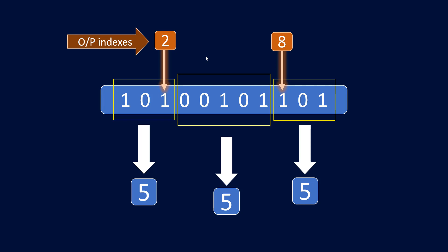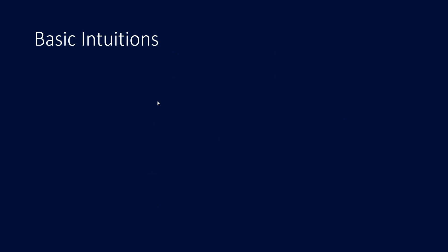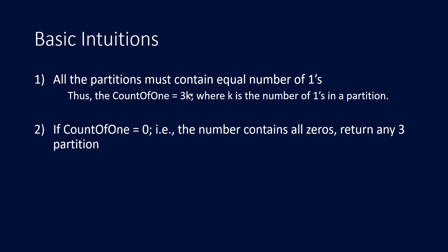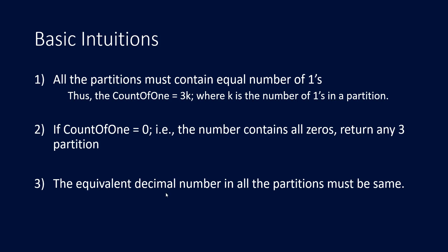Now that we know how to give the output, let's see the basic intuitions or deductions we can make. Since we need to partition into three equal parts, all three parts must have an equal number of 1s, and thus the number of 1s must be divisible by 3 — the count of 1s equals 3 times k, where k is the number of 1s in each partition. If not divisible by 3, return -1, -1. The second deduction: if all numbers in the array are 0, return any three-partition. The third: the equivalent decimal number in all partitions must be the same.